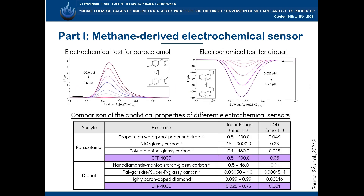The new material was applied as an electrochemical sensor by Professor Janegit's group to determine paracetamol and diquat in different samples. The sensor exhibited satisfactory selectivity for both analytes even in the presence of interferents.